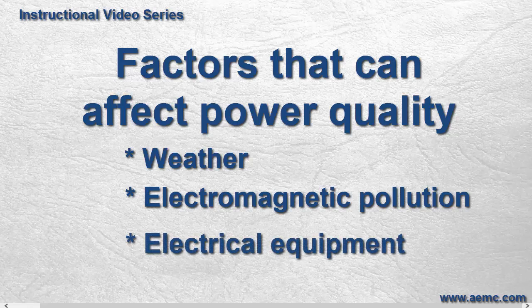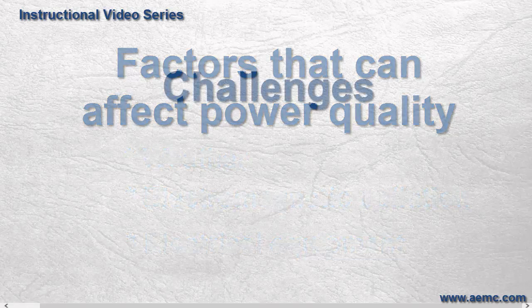In addition, electrical equipment operated by you, or by other customers on the network, can introduce additional electrical disturbances, such as harmonic distortion, voltage fluctuations, and so on. These and other factors can have a profound impact on the quality of the electricity being delivered at the supply terminal.